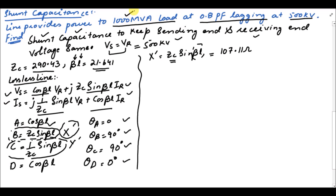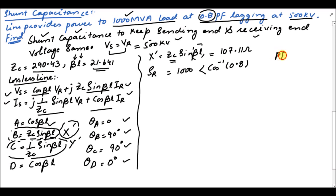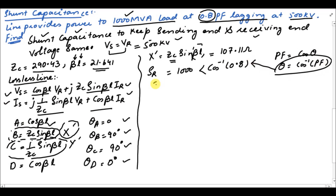In the question it is given that the load to be provided power by the transmission line is 1000 MVA at 0.8 power factor lagging. So we can calculate the apparent power at the receiving end: SR is equal to 1000 at angle cos⁻¹(0.8), since the power factor is 0.8 so theta equals cos⁻¹(0.8). Therefore SR is equal to 800 + 600j MVA.